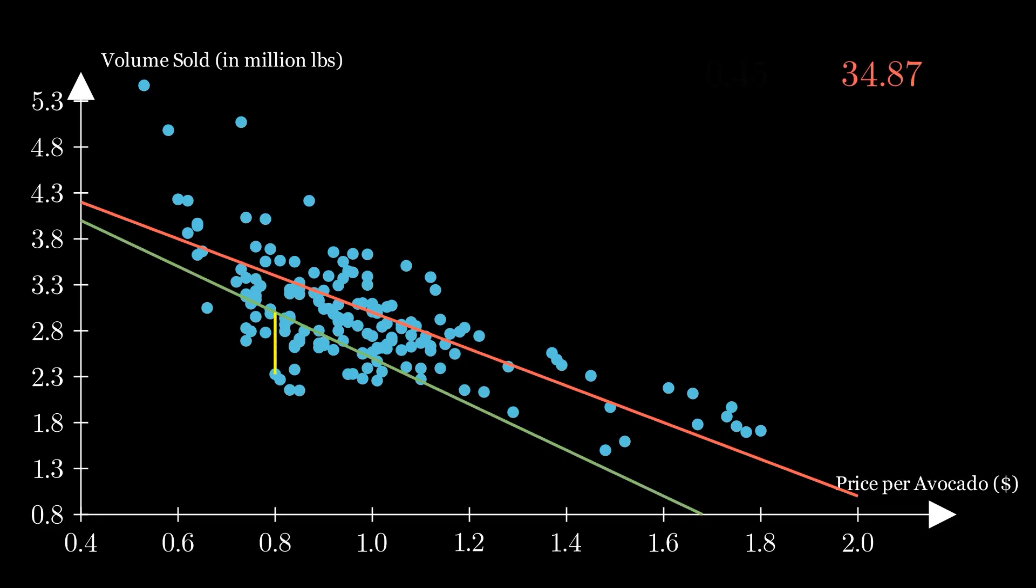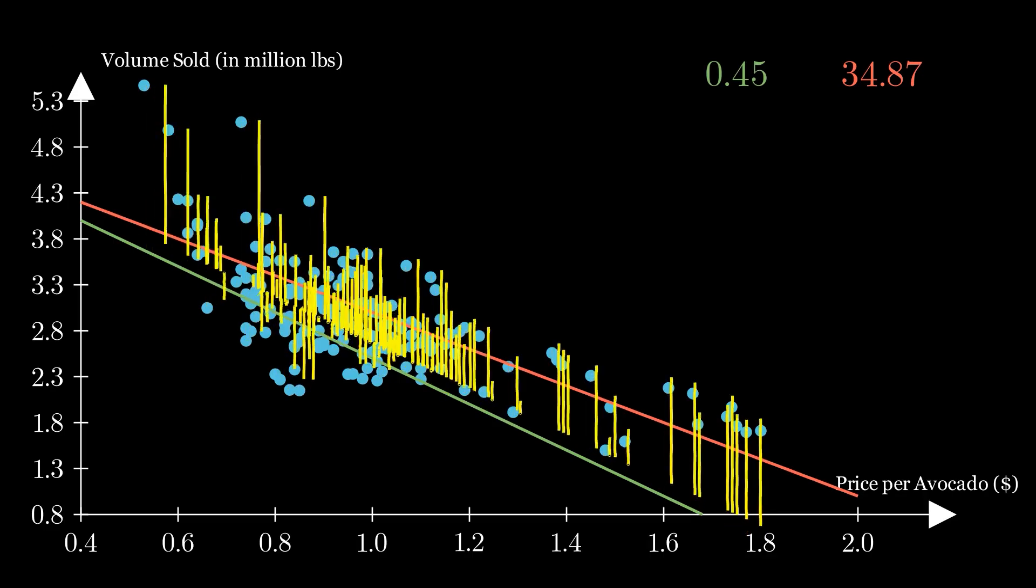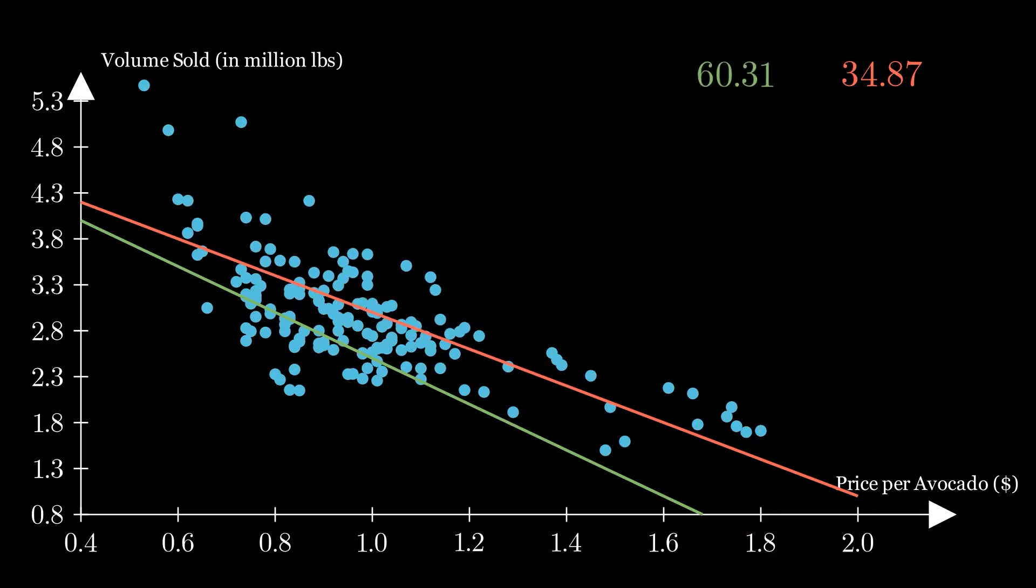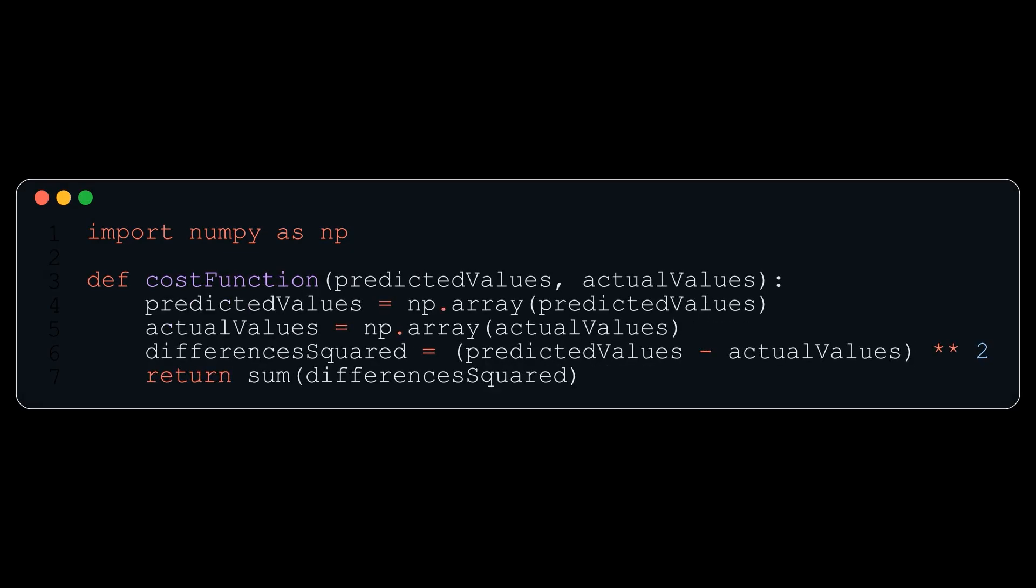As you can see here, the red line is a better approximation than the green line, since it has a lower error. And now here is the square error function just written in mathematical notation, and the code for how to make the square error function.